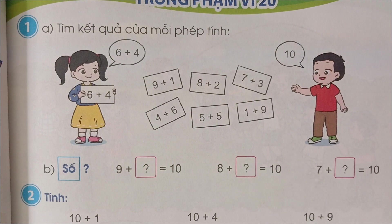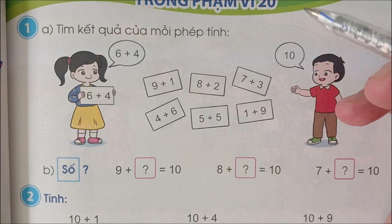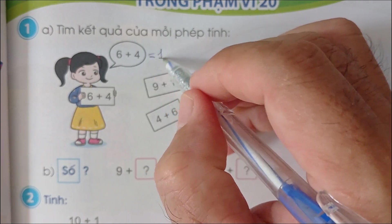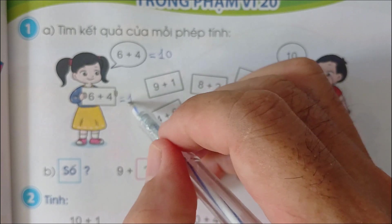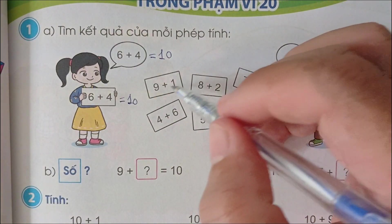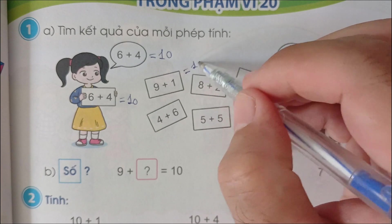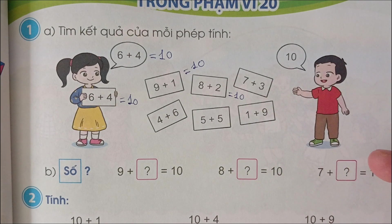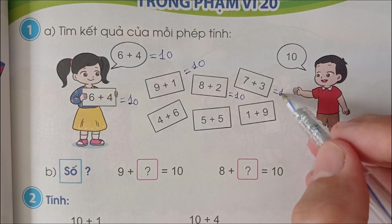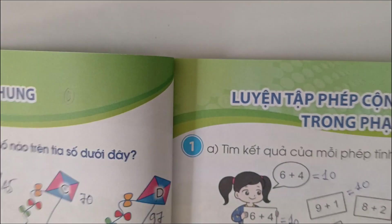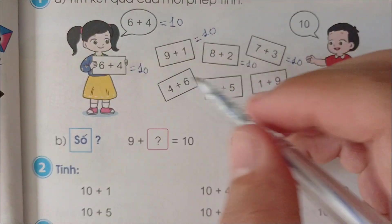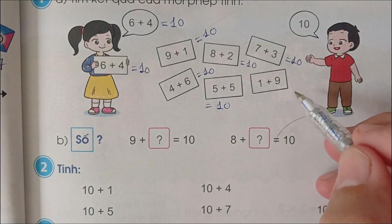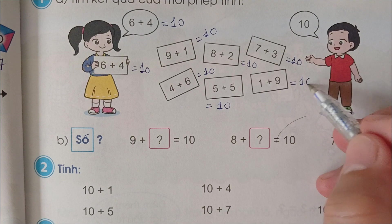Bài số 1a, tìm kết quả của phép tính. 6 cộng 4 bằng 10. 9 cộng 1 bằng 10. 8 cộng 2 bằng 10. 7 cộng 3 bằng 10. 4 cộng 6 bằng 10. 5 cộng 5 bằng 10. 1 cộng 9 bằng 10.